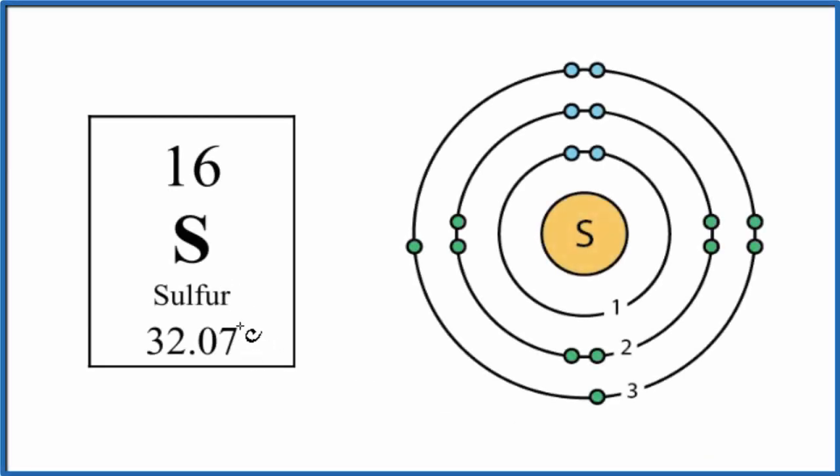Let's take a look at the atomic structure for sulfur. That's S on the periodic table. We'll also use the Bohr diagram here to help us visualize where these electrons are around the nucleus.